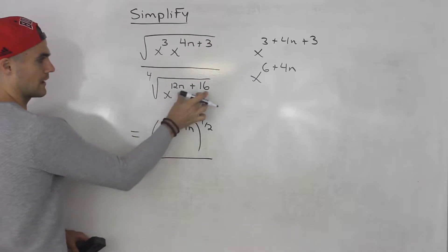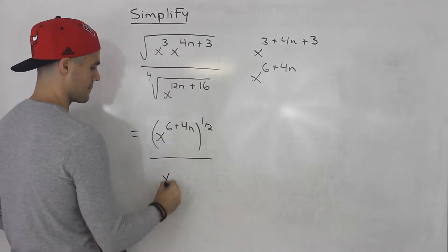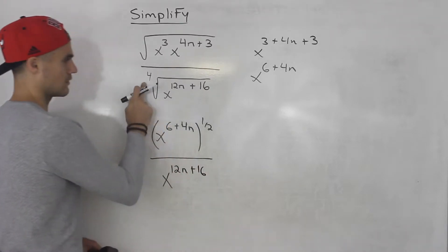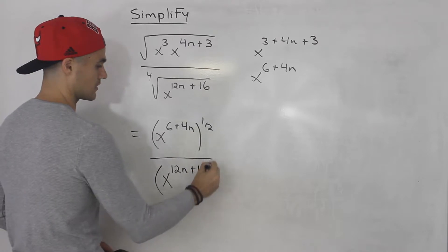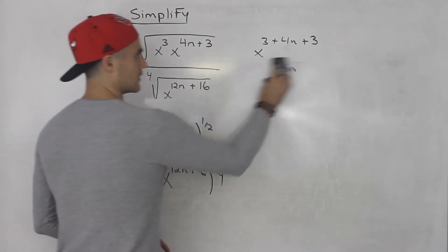And this is going to be all over. Now this 12n plus 16 can't really simplify that any further. But this fourth root here I'm going to change that to a rational exponent of 1 over 4 like that.